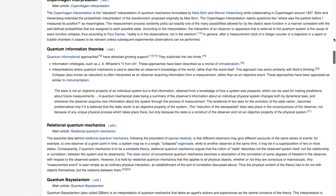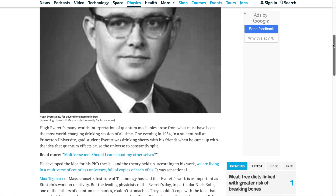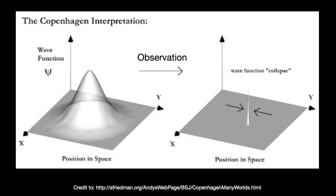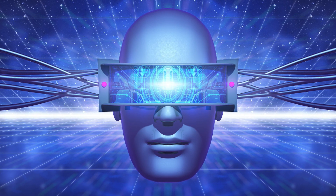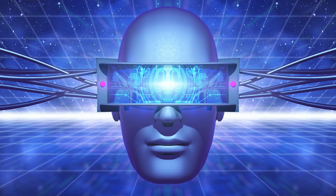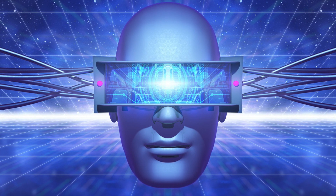Almost all those other interpretations that differ from this multiverse explanation are termed collapse theories. These are theories that say all the other possibilities vanish upon the act of observation. It is called collapse because in technical language, the mathematical formulae governing this situation — called the wave function — is said to collapse onto one value. What causes that collapse according to those people? Observation.